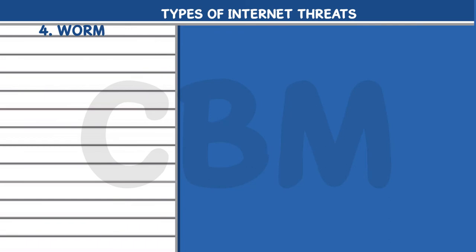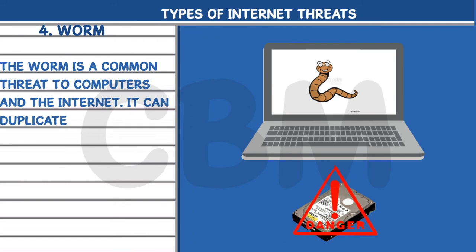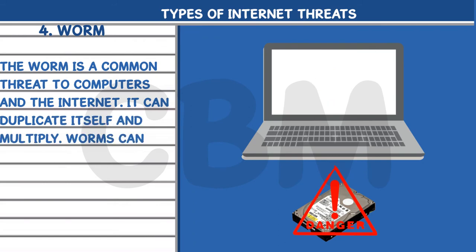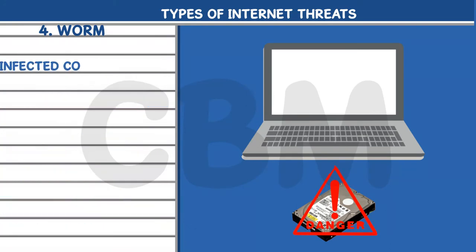4. Worm: The worm is a common threat to computers and the Internet. It can duplicate itself and multiply. Worms can copy themselves to all the computers connected in the network on their own. It stays active in an infected computer's memory.